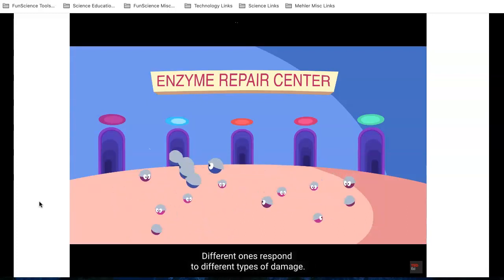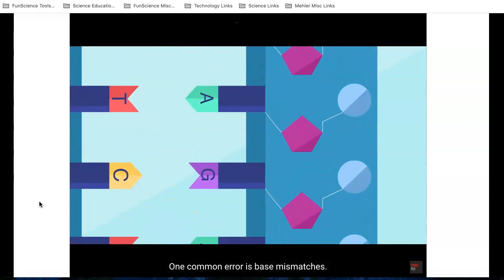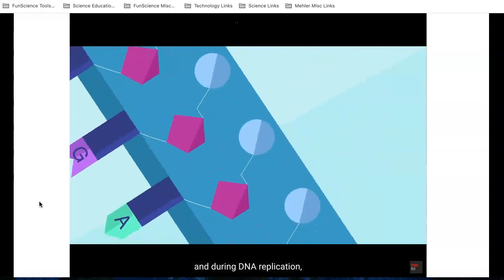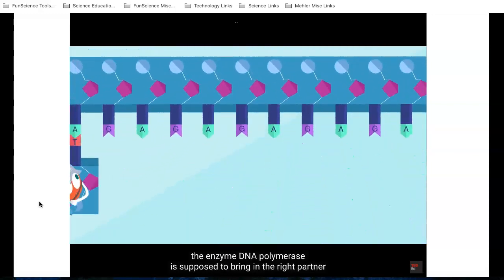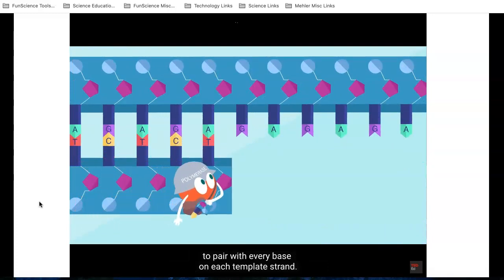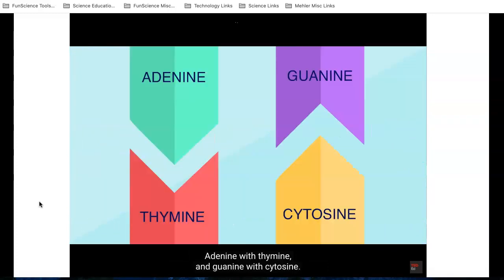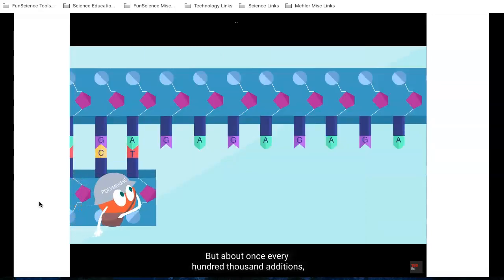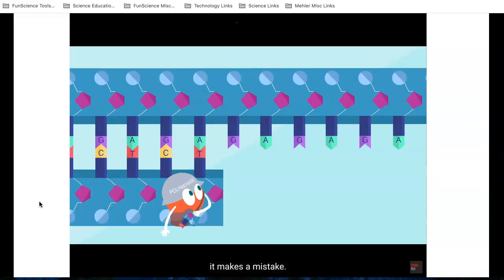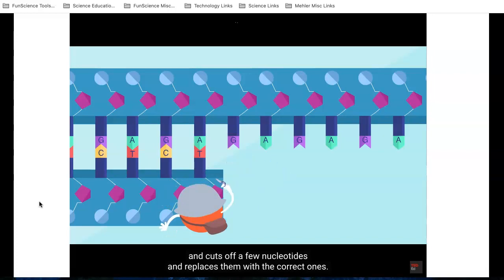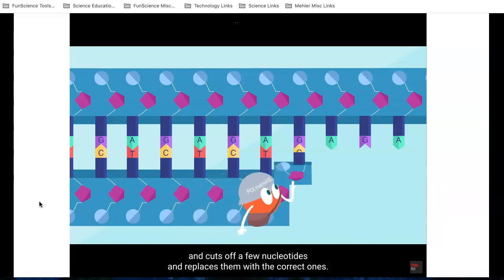Different ones respond to different types of damage. One common error is base mismatches. Each nucleotide contains a base. And during DNA replication, the enzyme DNA polymerase is supposed to bring in the right partner to pair with every base on each template strand, adenine with thymine and guanine with cytosine. But about once every hundred thousand additions, it makes a mistake.